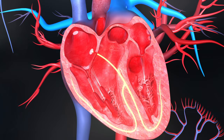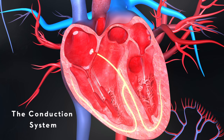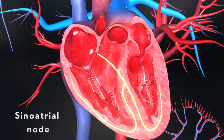Now let's explore the heart's electrical system, also known as the conduction system. This image depicts the major components of this system, which is responsible for generating and coordinating the electrical signals that control the heart's contractions. We begin with the sinoatrial node, also known as the SA node, often called the heart's natural pacemaker.